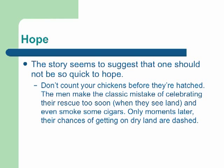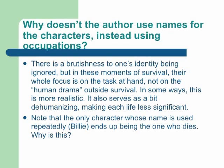The story suggests that one should not be so quick to hope — don't count your chickens before they're hatched. The men make the classic mistake of celebrating their rescue too soon when they see land, even smoking cigars. Only moments later, their chances of getting on dry land are dashed. Why doesn't the author use names for the characters instead of using their occupations? There is a certain brutishness in one's identity being ignored, but in moments of survival their focus is entirely on the task at hand. It also serves to dehumanize, making each life less significant. Notably, the only character whose name is used repeatedly — Billy — ends up being the one who actually dies.